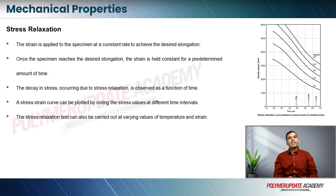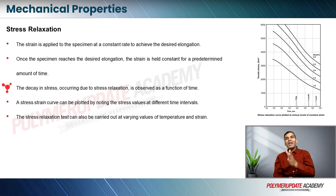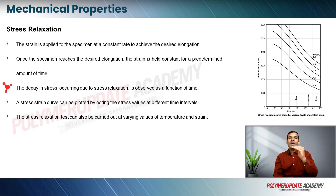In the stress relaxation test, strain is applied to a specimen at a constant rate to achieve the desired elongation. Once the specimen reaches the desired elongation, the strain is held constant for a predetermined amount of time. What we observe is a decay in the stress value occurring due to relaxation of stress, observed as a function of time — as time passes, the stress gets relaxed.